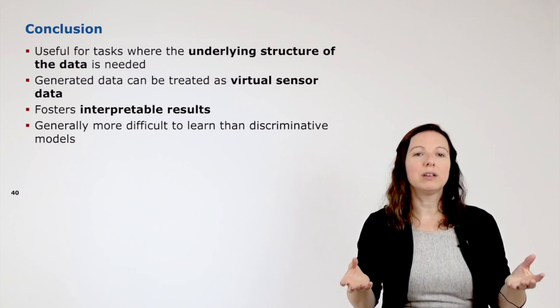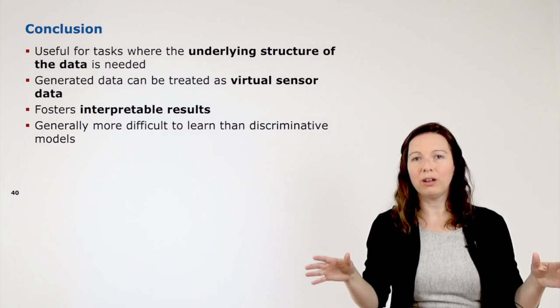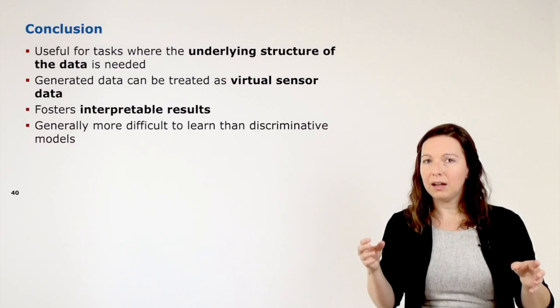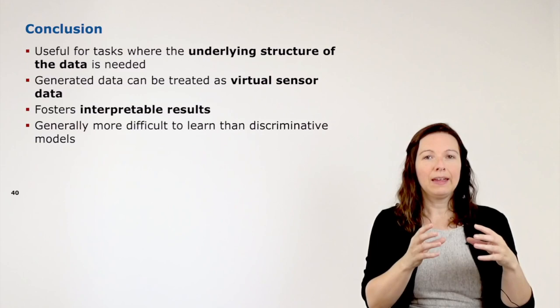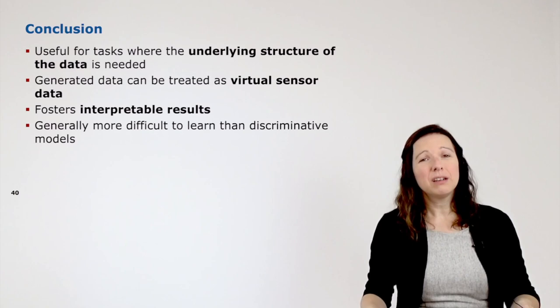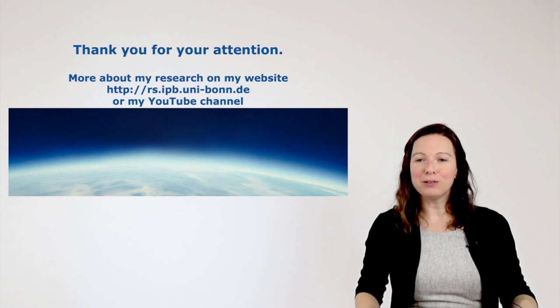To conclude, what I showed you is that generative models are useful for tasks where the underlying structure of the data is needed. The generated data can be treated as virtual sensor data — it's open what you can do with the data, or you can even fill in data gaps. It forces interpretable results: in the last application I showed you can manipulate how images are generated and tell others what you did and how it was generated. Generally it is more difficult to learn than discriminative models, but it gives really cool results. With this I thank you very much for your attention — you can go to my website or have a look at my YouTube channel where you can find many more videos. Thanks a lot.